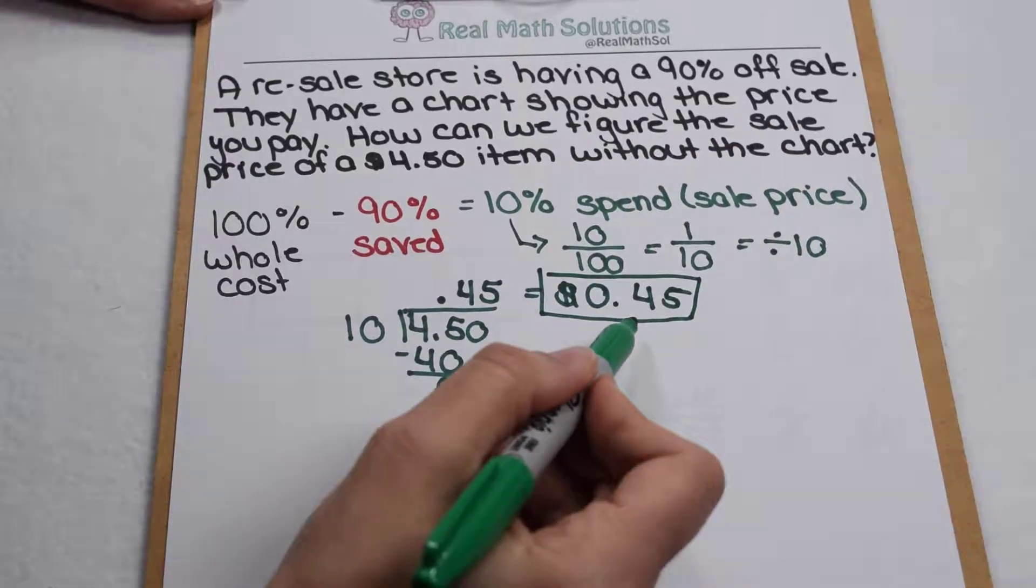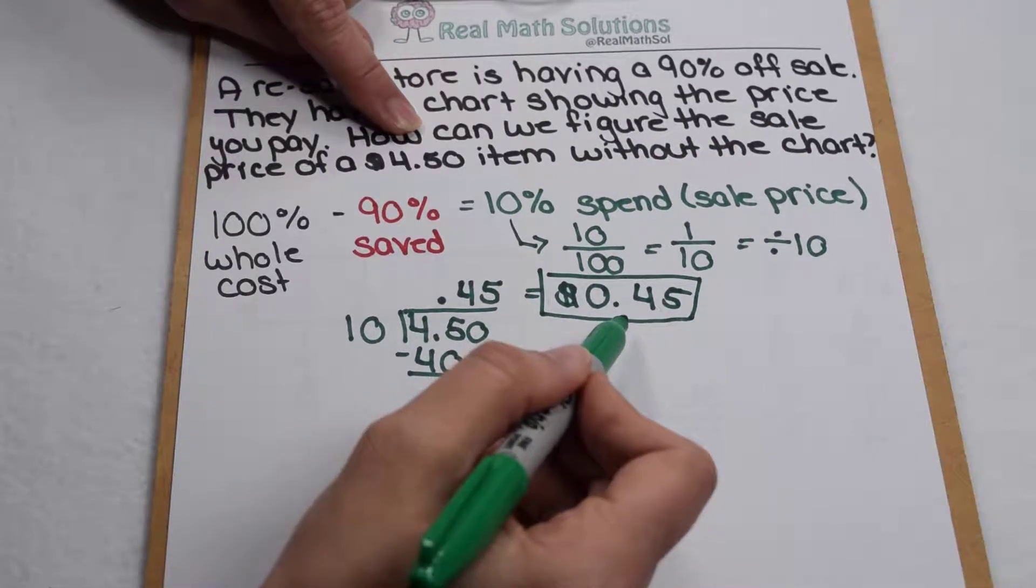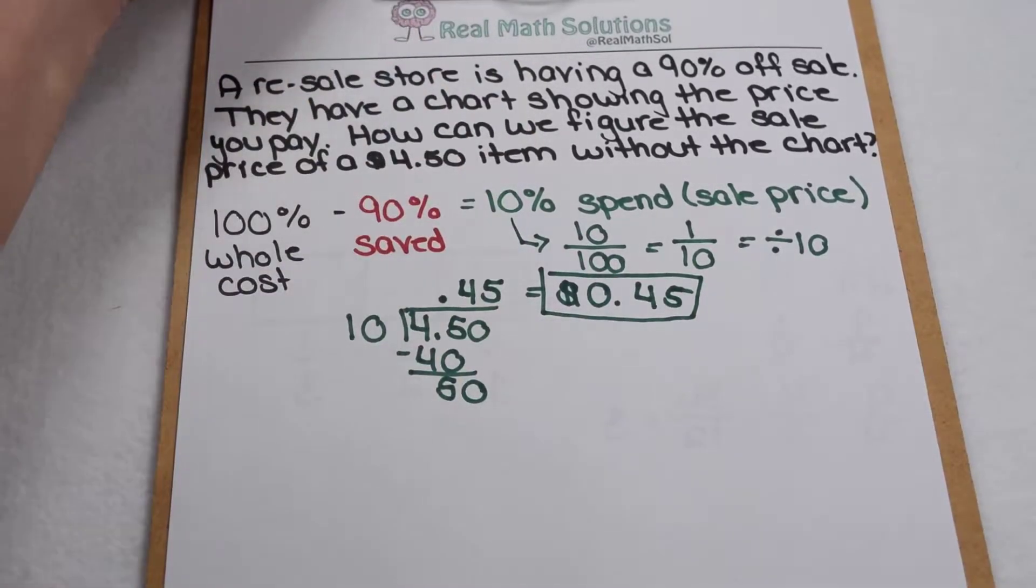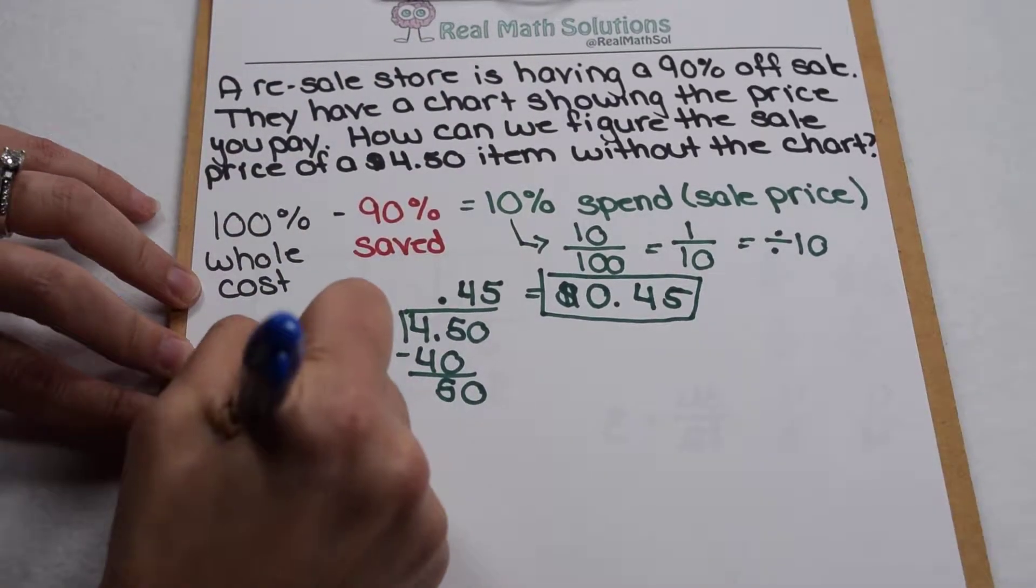Okay if we compare 45 cents to 450 we notice it uses the same digits. The only difference is where my decimal point is. Well let's think about what that is.